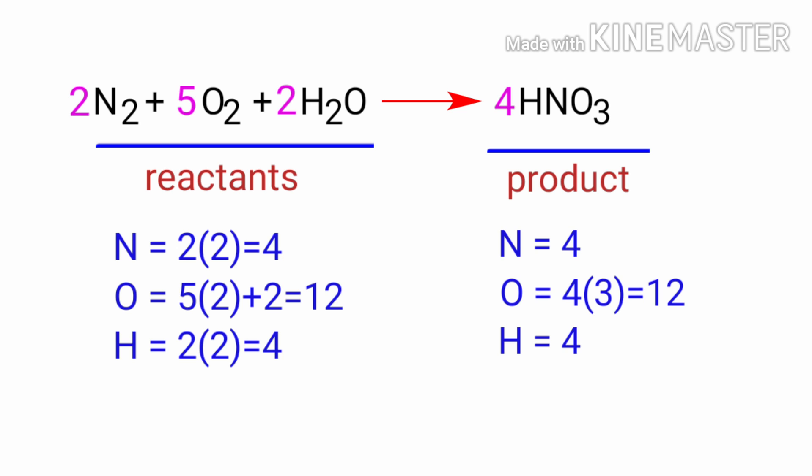The equation is now balanced. There are four nitrogen atoms, twelve oxygen atoms, and four hydrogen atoms on both sides.